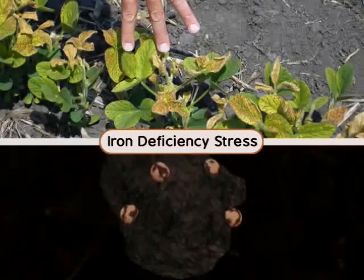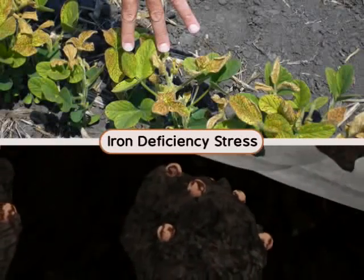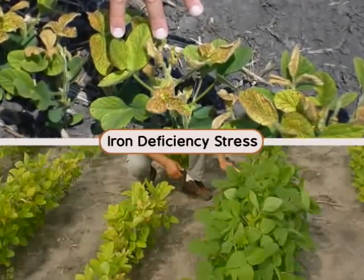Soybeans are sensitive to low iron levels, which causes the plants to exhibit yellow leaves. This yellowing of the young leaves slows plant growth and reduces yield.